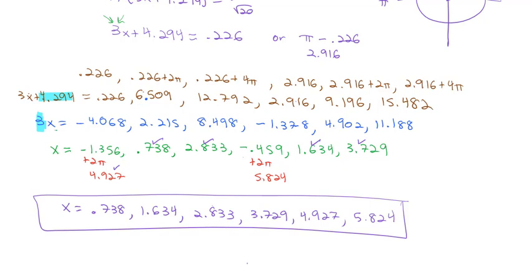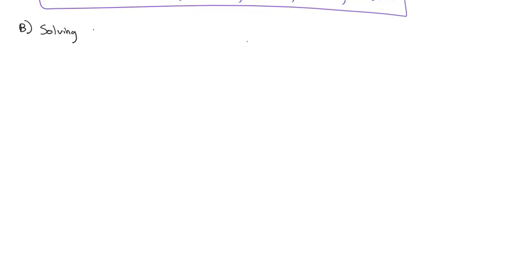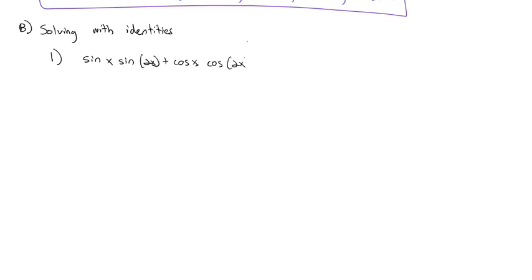Now let's go more into solving equations with these identities. The second use of identities is solving equations. For example, sin(x)·sin(2x) + cos(x)·cos(2x) = √3/2. We should recognize that sine·sine + cosine·cosine is the cosine of a difference formula.